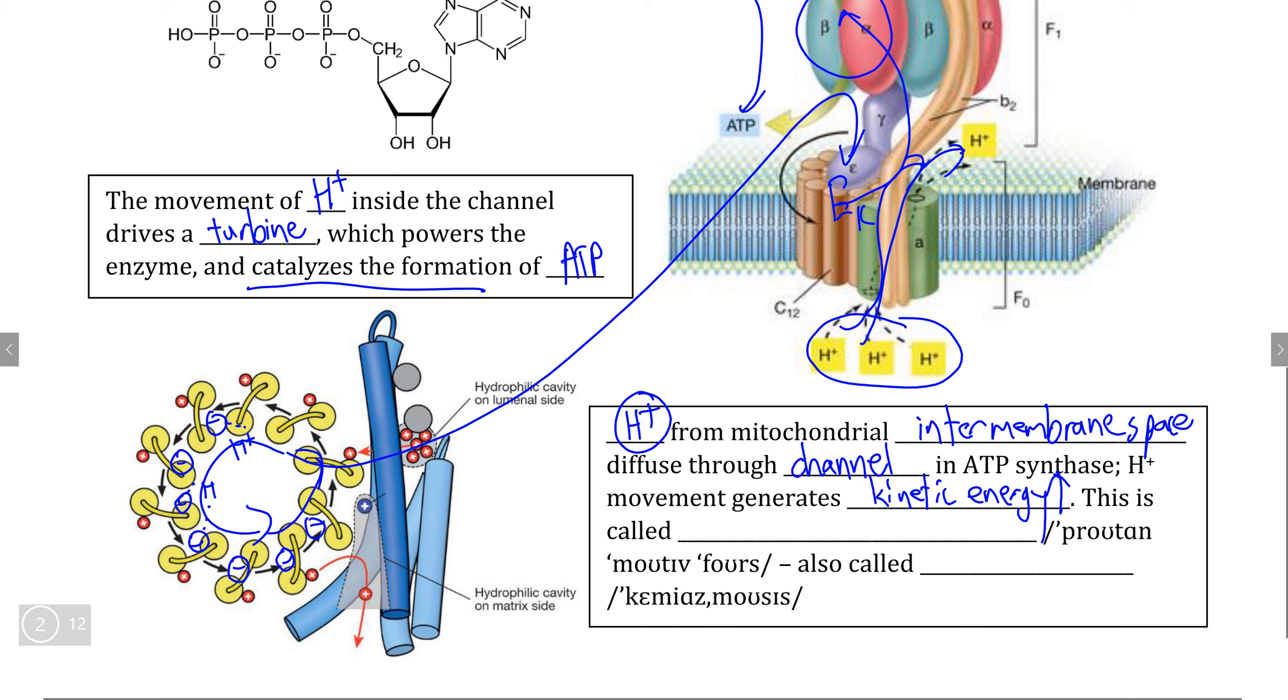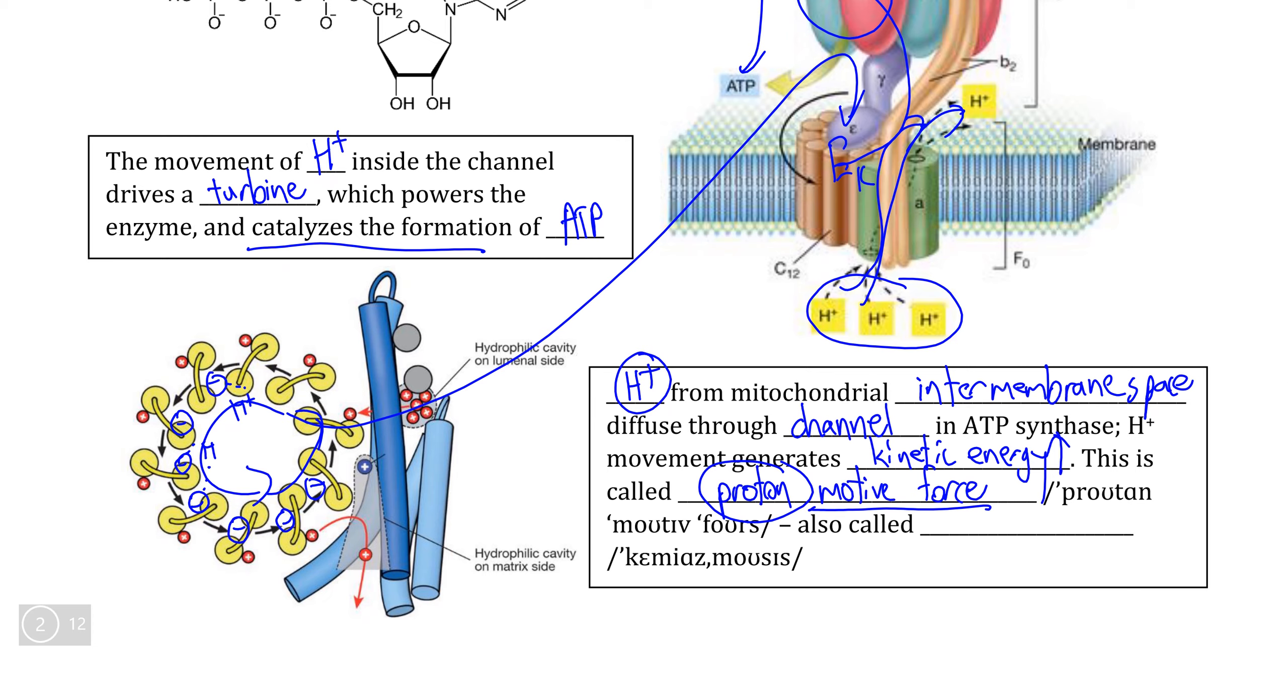And this idea, the idea that the kinetic energy is the force that drives the powering of this enzyme here is what we call a proton motive force, or simply the force that drives this turbine led by H plus ions also called protons. And the other name that some biochemistry textbooks use to describe this process is the process of chemiosmosis.